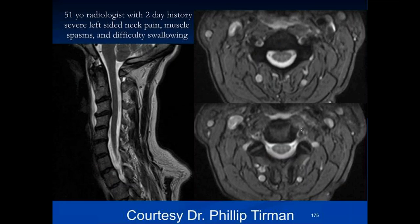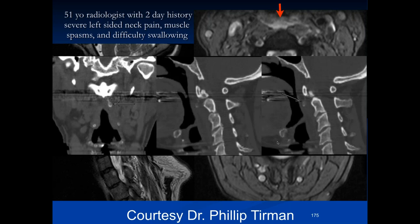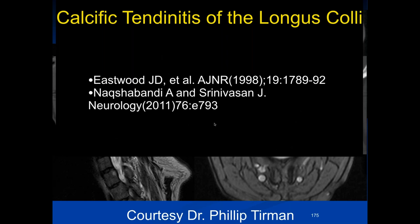51-year-old radiologist with a two-day history of severe left-sided neck pain, muscle spasm, and difficulty swallowing. Sagittal and two axial images show some disc disease and fluid anteriorly — anterior longitudinal ligament area. There is ossification of one of the ligaments there — longus colli. Basically the same disease, and it can have a pretty acute presentation.